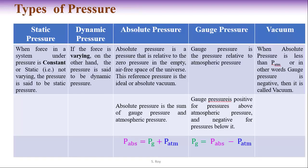With the start of discussion of pressure measurement, we need to know different definitions related to pressure. First: static pressure. When the force in a system under pressure is constant — meaning not varying with respect to time — that pressure is said to be static pressure. If the pressure of a particular system is constant with respect to time, it is termed as static pressure.